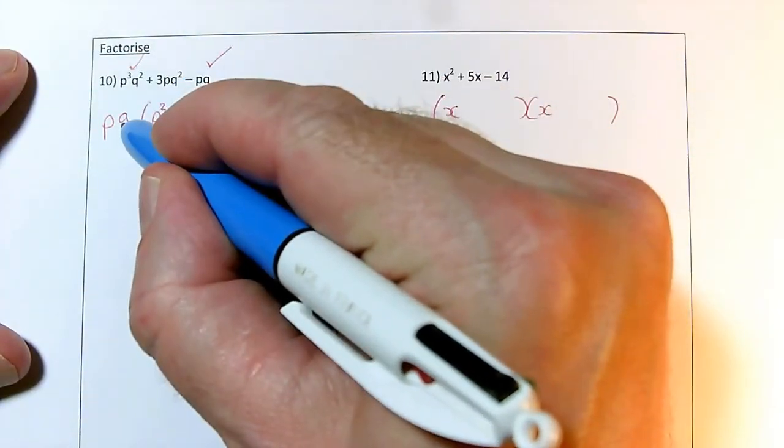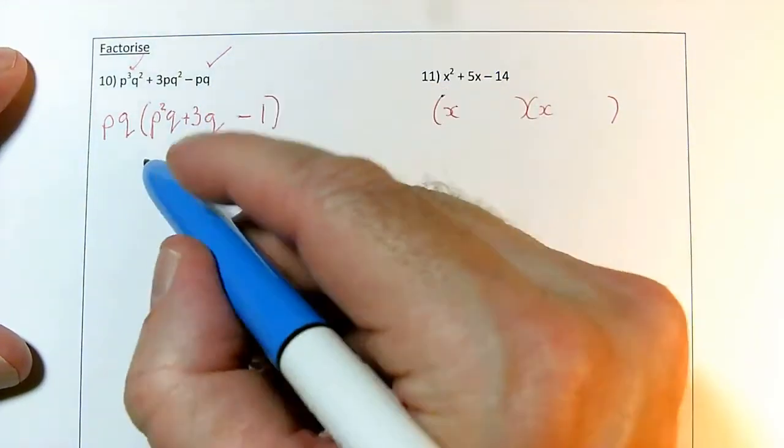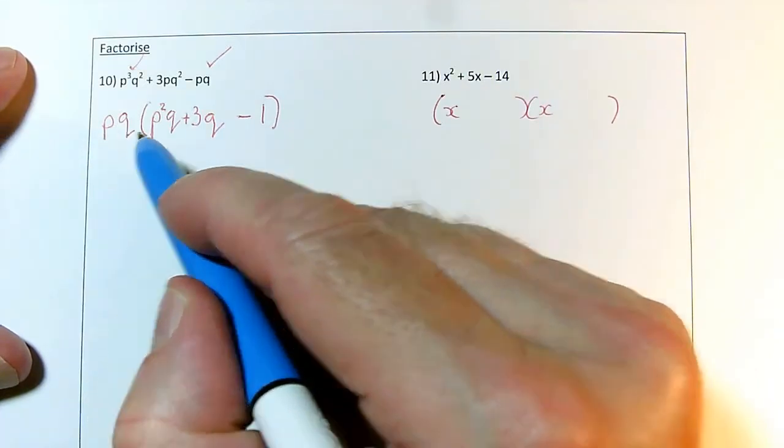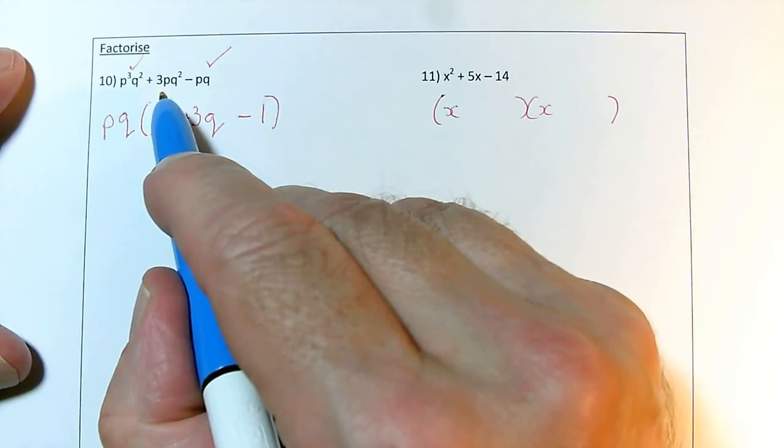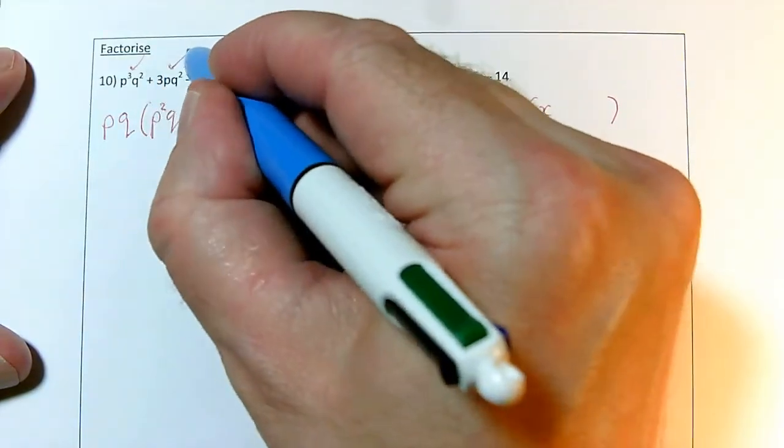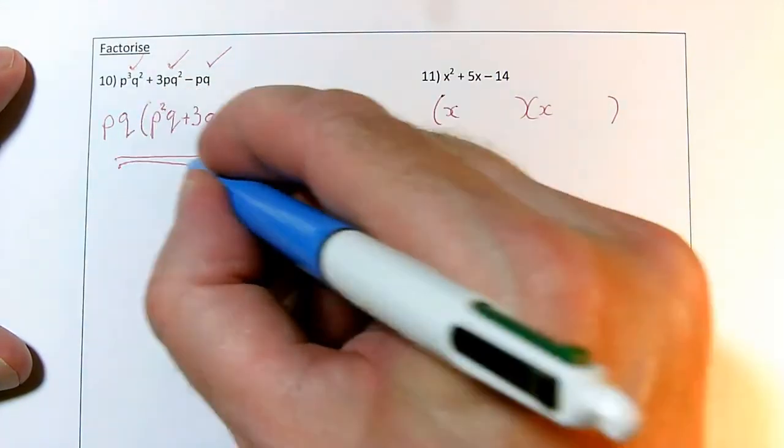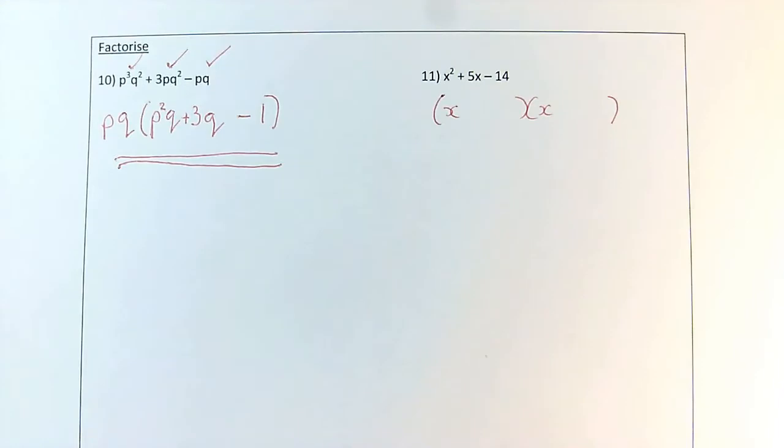I've got a q outside the bracket, so to make my q squared, I need to have a q going with that 3. So let's check. p times q times 3 times q does equal 3 times p times q squared, because that's the q times the q, so I've made that term work. So that is my factorised form of this expression. So that's that one done.